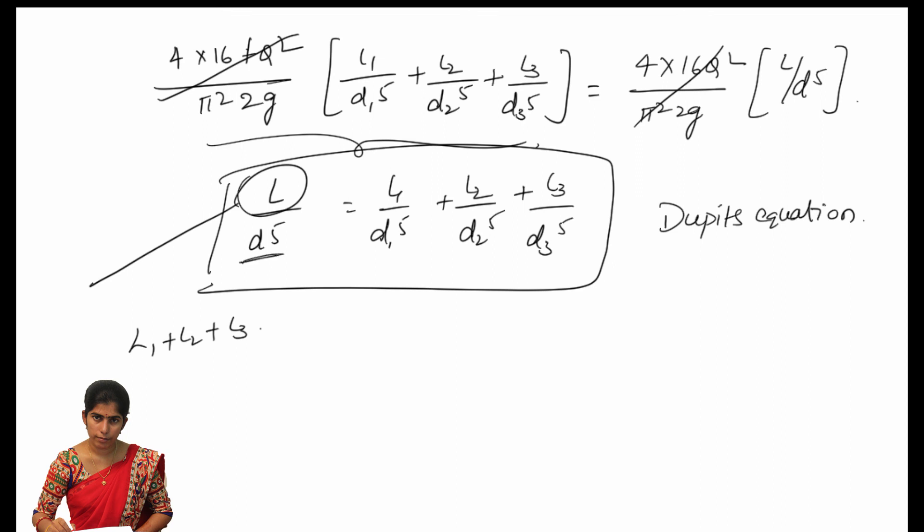From this, we find what length and diameter to use for the equivalent pipe so that we obtain the same discharge as from the compound pipe. This expression is mostly used when solving problems for equivalent pipe. In the next video, we will solve one problem based on this model. Thank you.